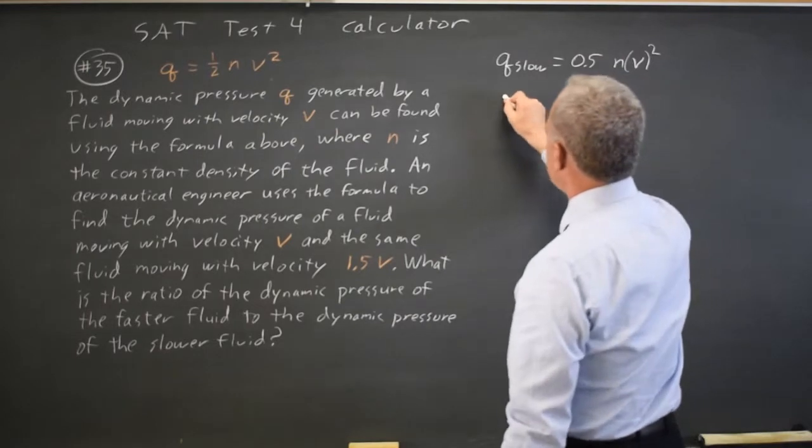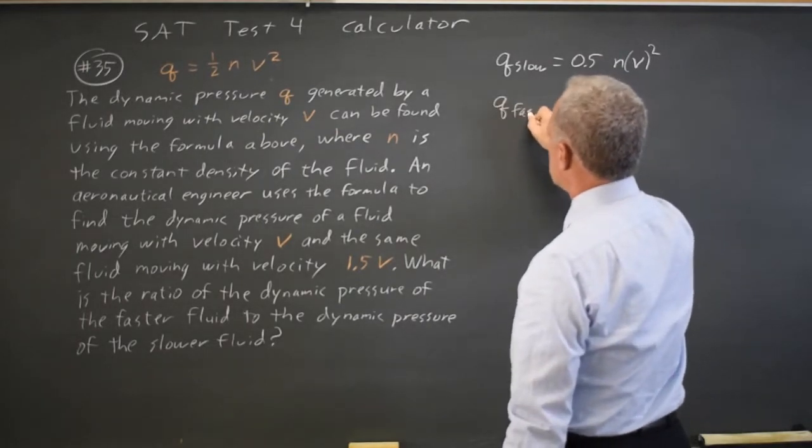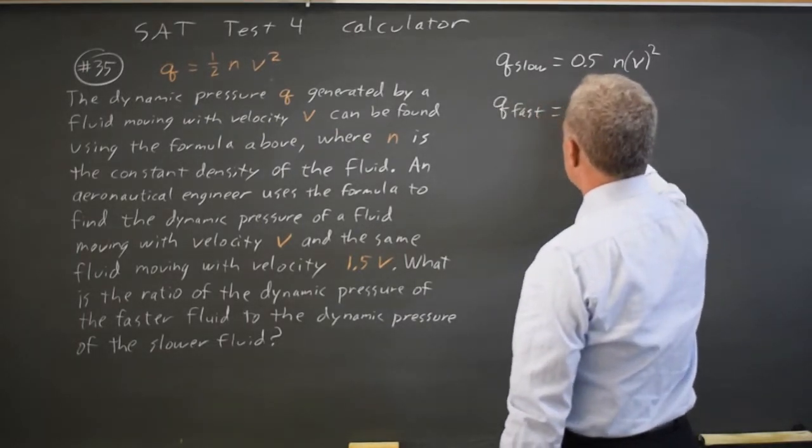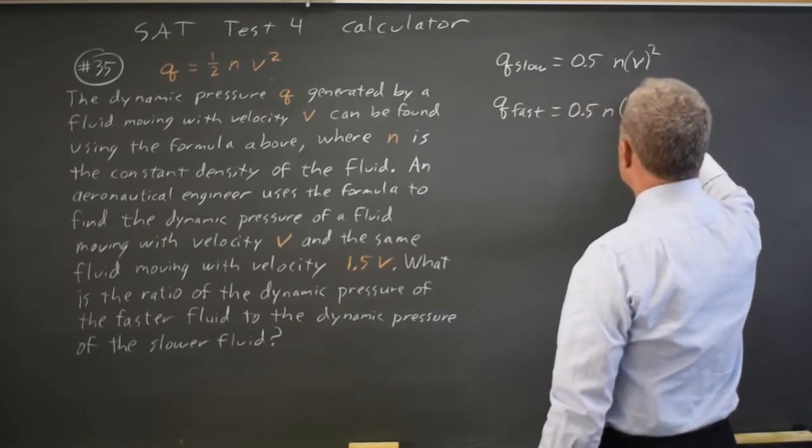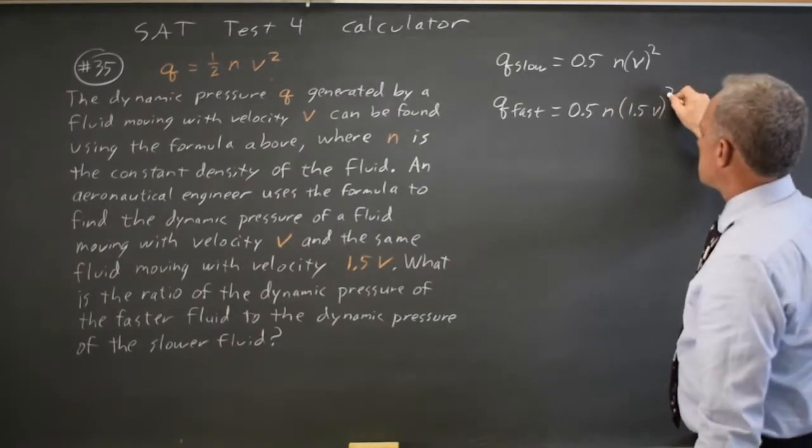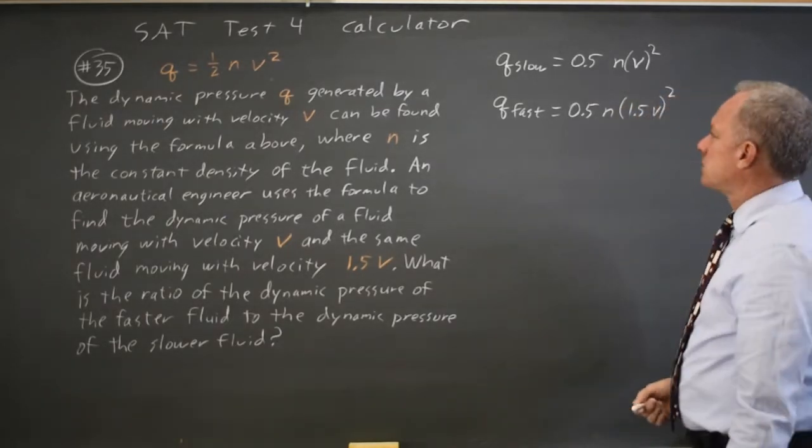And Q for the fast fluid is, again, 0.5 times N, and now it's times 1.5V. That whole 1.5V, the quantity is squared. The product is squared.